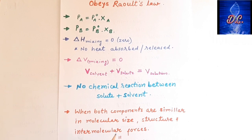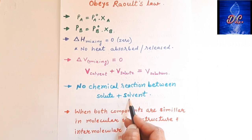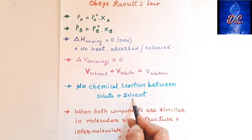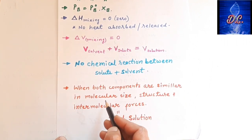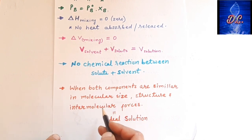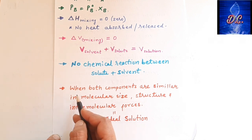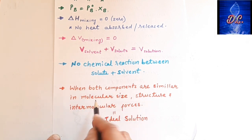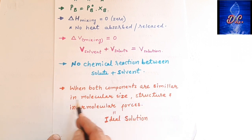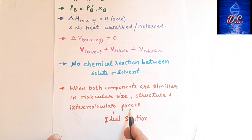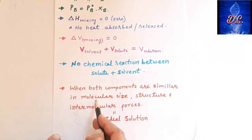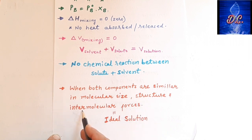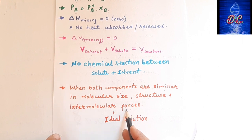Another characteristic of Ideal Solution is that there is no chemical reaction between solute and solvent molecules. If there is a chemical reaction between them, it will not result in the formation of an Ideal Solution. A helpful trick: when both components A and B that you mix are similar in their molecular size, their structure, and their intermolecular forces — meaning the size, structure, nature, and intermolecular forces are almost the same — then it will form an Ideal Solution.